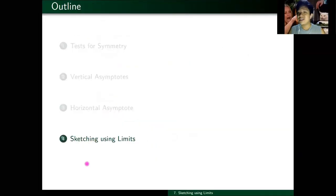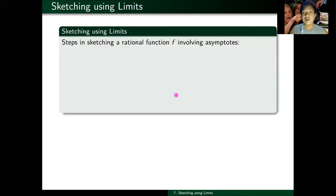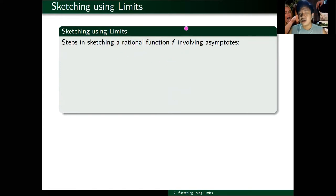Now we're ready to sketch, using limits, some of your rational functions involving asymptotes. I'll discuss the steps we need to follow when given a rational function and how to sketch it. First, we need to identify the domain of f.